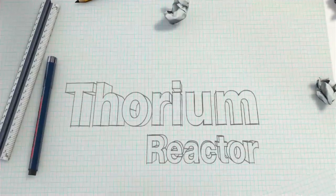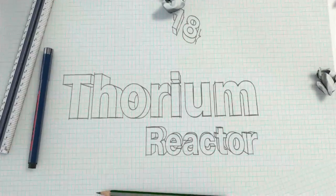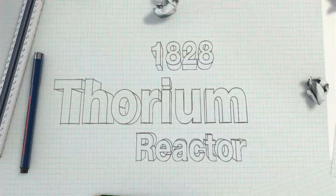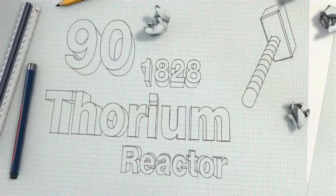Thorium is a natural radioactive element. Discovered in 1828, it has an atomic weight of 90 and was named after the Norse god Thor.